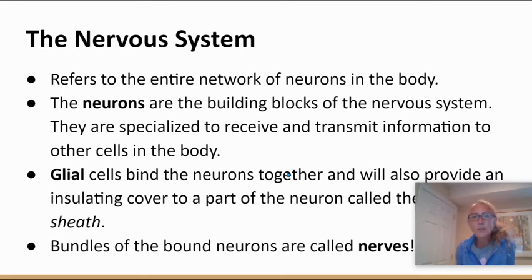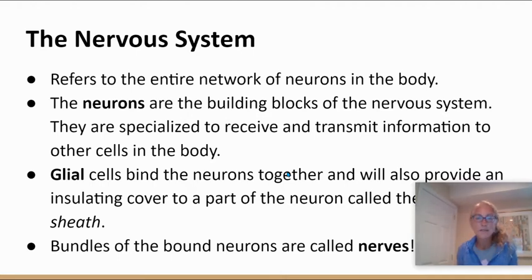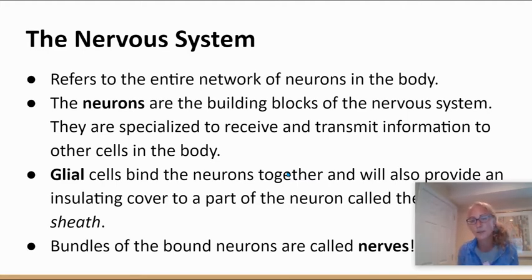When I talk about the nervous system, I'm talking about the entire network of neurons — those are special cells throughout the body. Neurons are the building blocks of our nervous system and they are specialized cells. There are many different types of neurons; we'll focus on three in this unit. They are specialized to receive and transmit information to other cells in the body.